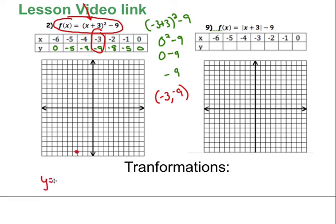When I go to graph these, I go back to my parent function y = x². If I plug in the points for the parent function: 1 squared is 1, 2 squared is 4, 3 squared is 9. Starting from the vertex, I go over 1 — up 1; back to vertex, over 2 — up 4; back to vertex, over 3 — up 9. That gives me my next points.